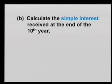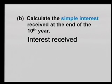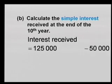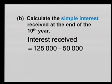Now let's look at the next part of the question: calculate the simple interest you receive — that's the money you got for doing nothing. Interest received: one hundred and twenty-five thousand minus the original fifty thousand gives you seventy-five thousand Rand.